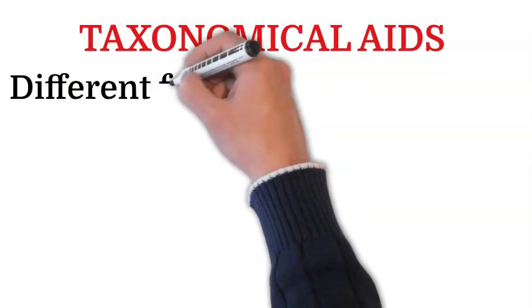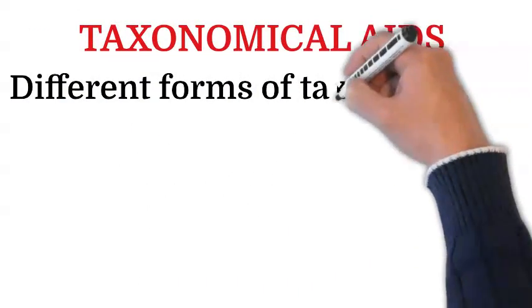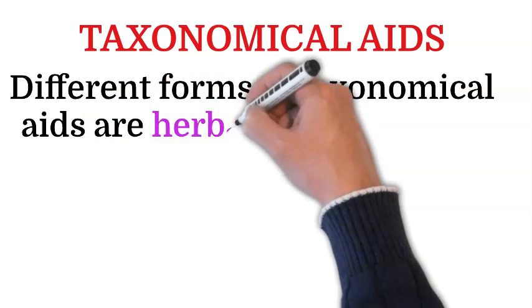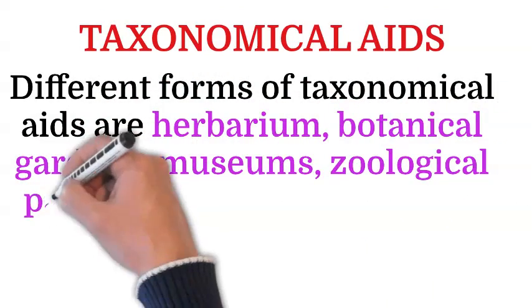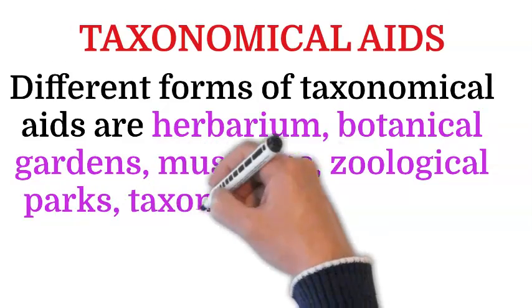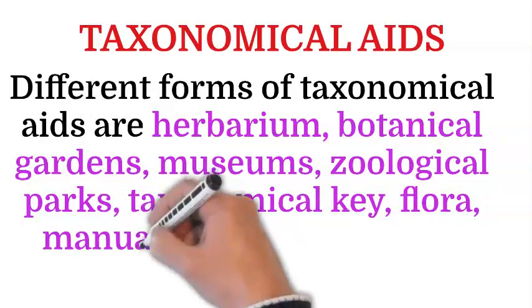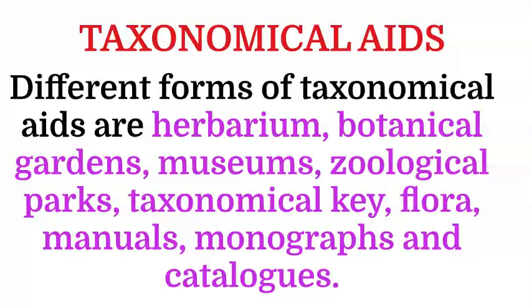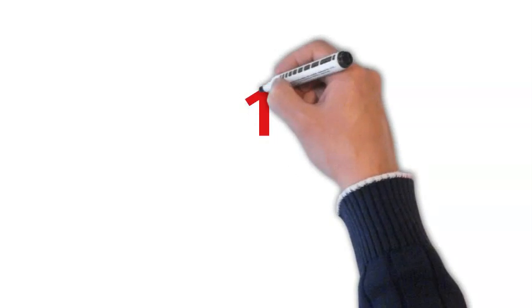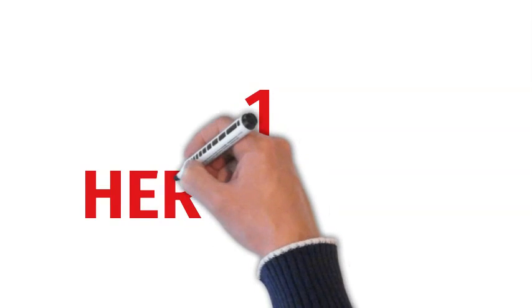Different forms of taxonomical aids are: herbarium, botanical gardens, museums, zoological parks, taxonomical key, flora, manuals, monographs and catalogs. Now let's discuss about some of these taxonomical aids. First, let's come to herbarium.